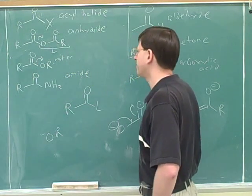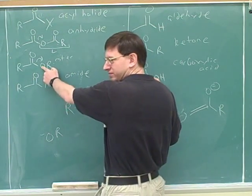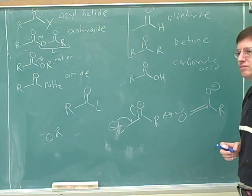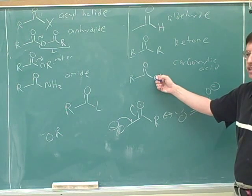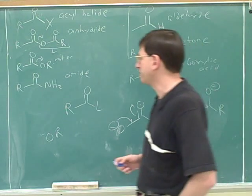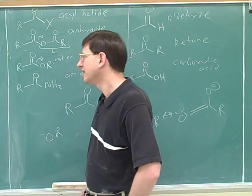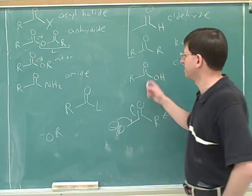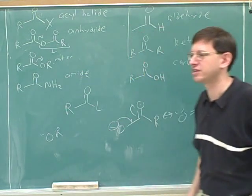For many purposes, carboxylic acids are similar to esters in reactivity. Why? Because it's just OH versus OR as the leaving group — they both have an oxygen leaving group. It doesn't make much difference whether you have a hydrogen or an R group. In both cases, you have a negative charge on the oxygen when it leaves. There are some differences, but for some purposes they're similar.